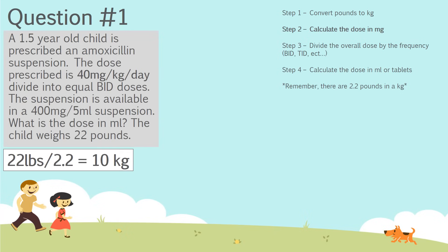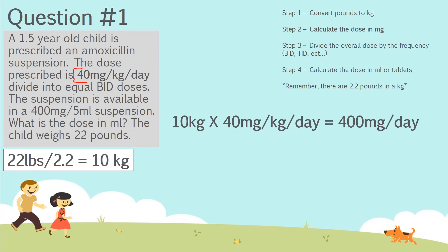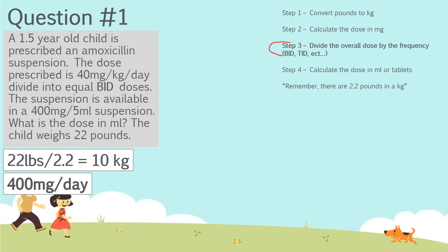Step two: calculate the dose in milligrams. The doctor has prescribed 40 milligrams per kilogram per day. We multiply the child's weight — 10 kilograms — by 40 milligrams per kilogram per day. The kilograms cross out, and we're left with 400 milligrams per day.